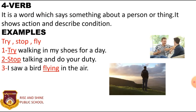Next is Verb. Verb is an action word. It is a word which says something about a person or thing. It shows actions and describes condition. Verb comes from the Latin word Verbum. It is so called because it is the most important word in a sentence. For example: 'Try walking in my shoes for a day.' 'Stop talking and do your duty.' 'I saw a bird flying in the air.' In these sentences, Try, Stop and Fly are verbs.